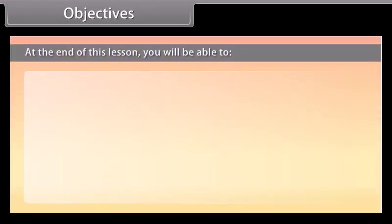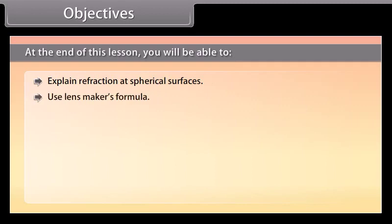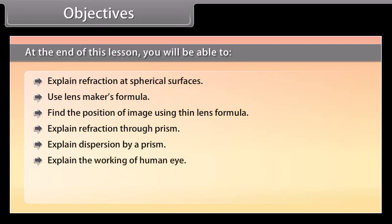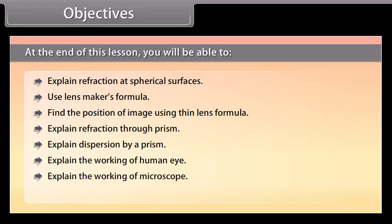Objectives. At the end of this lesson, you will be able to: Explain refraction at spherical surfaces, use Lensmaker's formula, find the position of image using thin lens formula, explain refraction through a prism, explain dispersion by a prism, explain the working of the human eye, explain the working of a microscope, and explain the working of a telescope.